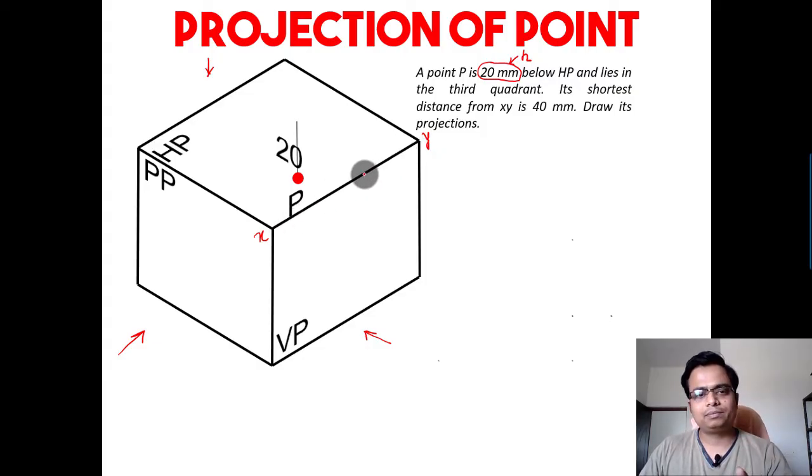So out of all these infinite points, there will be one point from where this point will be at a minimum distance, or this point P will be at a shortest distance. It will be somewhere here. This will be that point, and we are interested in this shortest distance, which has been given as 40 millimeters.